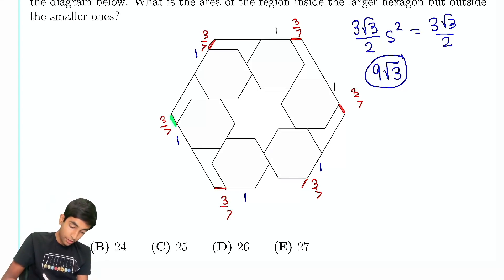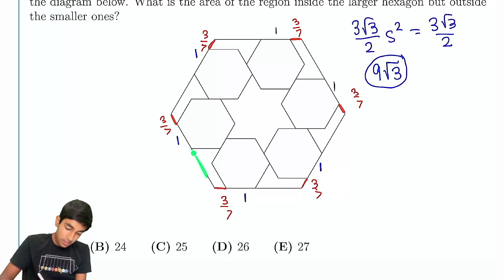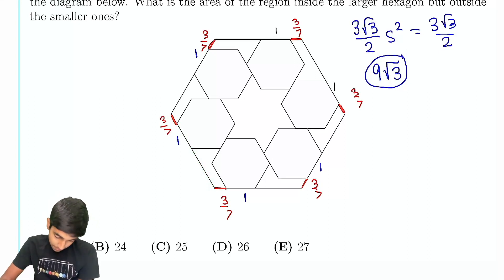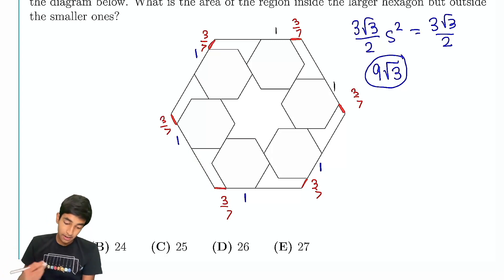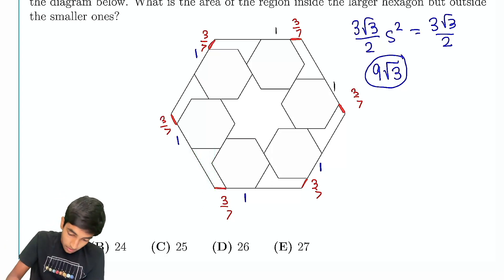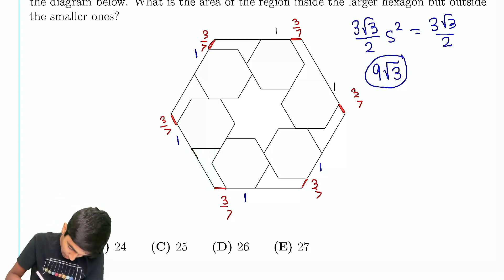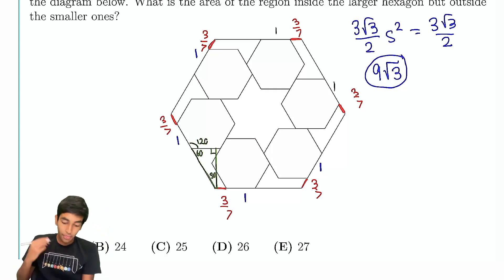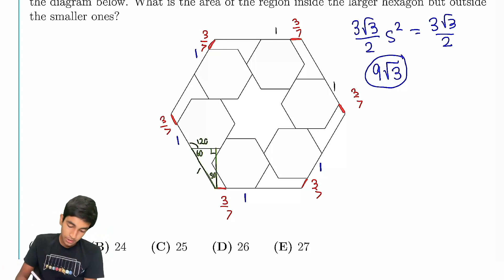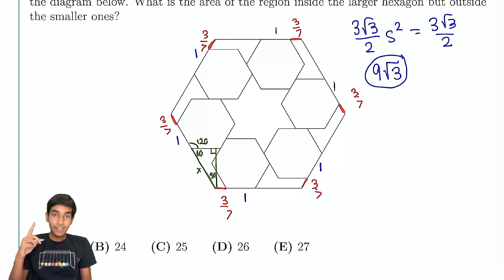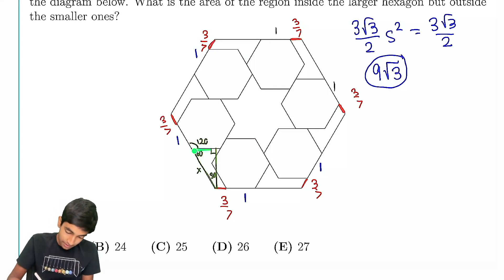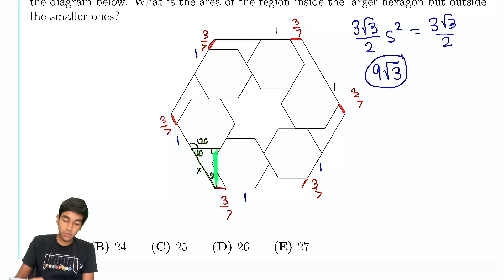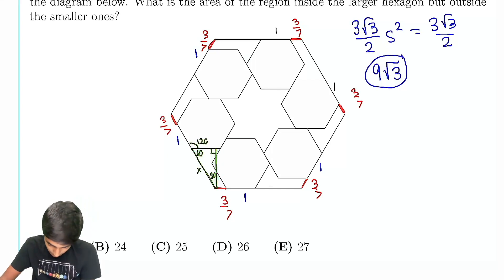The key thing is we know certain parts of the side length. We know this part, we know this part — the only thing we don't know is this remaining part, which we need to find. The idea is to drop an altitude. This gives us a 30-60-90 triangle, since the interior angle of a hexagon is 120°, making the remaining angles 30° and 60°. We're trying to solve for x, which is equivalent to finding one of the legs of this triangle.